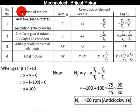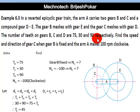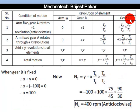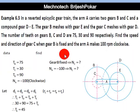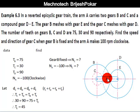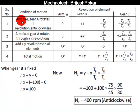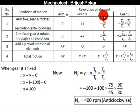For the gear train analysis, we use a table of motions. The elements are: arm A, gear B, compound gear D-E, and gear C. The first condition is when the arm is fixed and gear B is rotated plus one revolution — so arm A = 0 and gear B = +1.